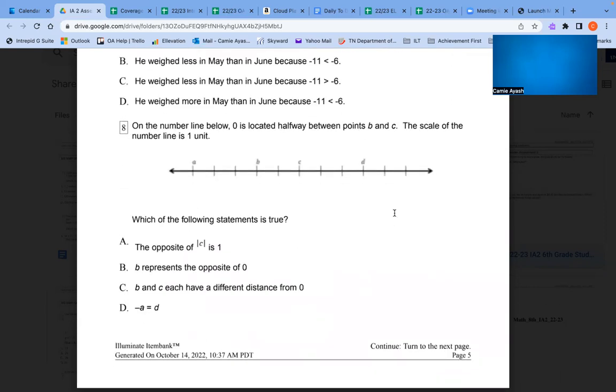Number 8: On the number line below, zero is located halfway between points B and C. The scale of the number line is one unit. Which of the following statements is true? A. The opposite of C is 1. B. B represents the opposite of zero. C. B and C each have a different distance from zero. D. Negative A equals D.